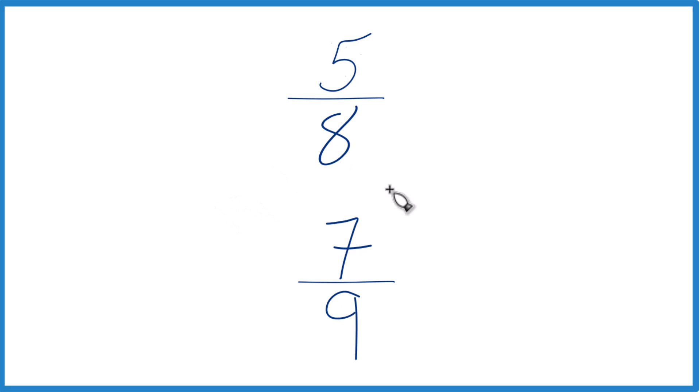The other way is we could find a common denominator. Right now we have 8 and 9, but if we could get these to be the same, we just compare the numerators and we're done. Let's do that. How about I just take 8 times 9? And that'll give me 72.